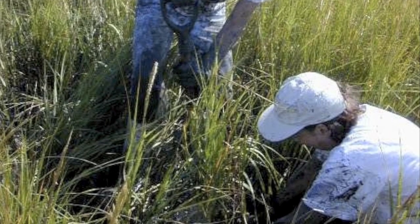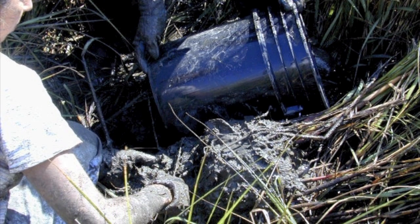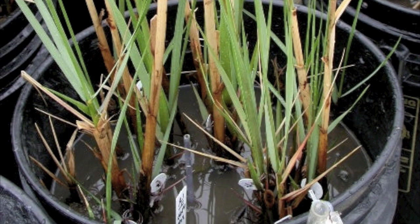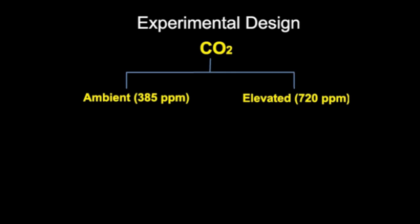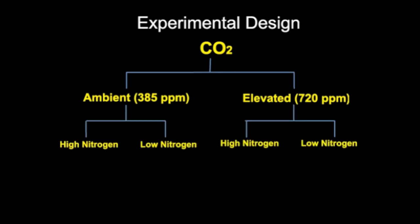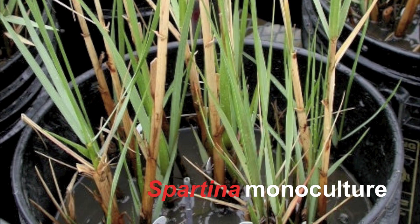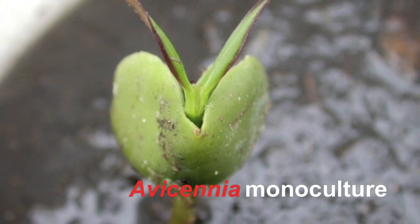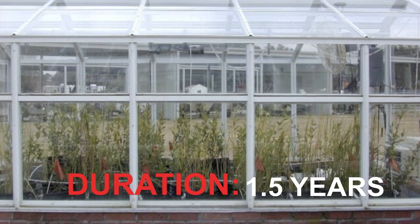Scientists collect segments of marsh, which are established in containers called mesocosms, and transport them to the CO2 facility. The mesocosms are then randomly assigned to different experimental treatments designed to test the response of plants to hypothetical conditions. In this study, the mesocosms were subjected to either ambient or elevated CO2, as well as to either high or low availability of nitrogen in the soil. Three different plant assemblages were tested: Avicennia alone, Spartina alone, and a mixture of the two species. Propagules of the black mangrove were added to the mesocosms to mimic the natural dispersal process whereby they invade salt marshes. The experiment lasted a year and a half to allow sufficient time for a response.